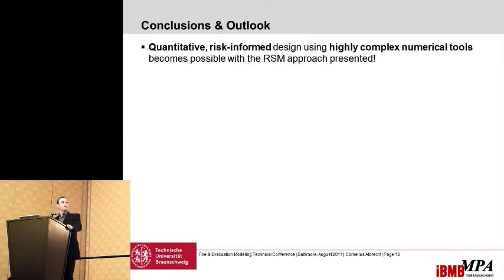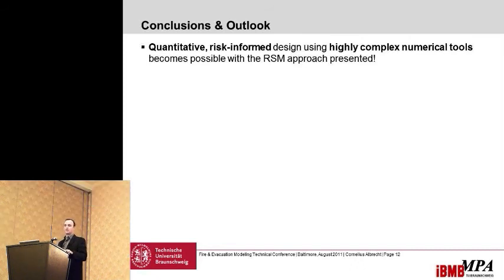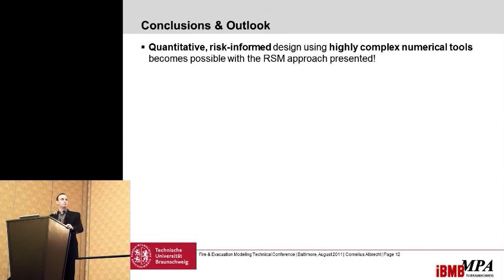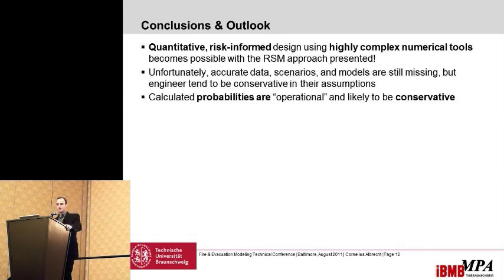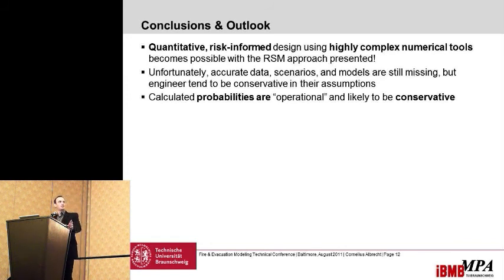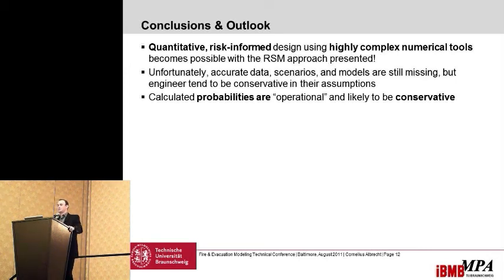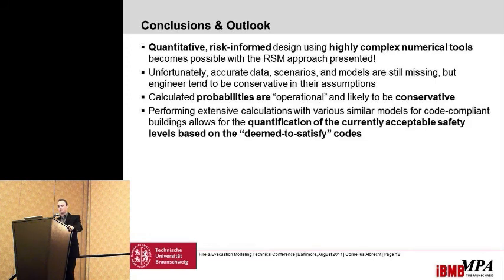In conclusion, we have a quantitative risk-informed design using complex numerical tools such as CFD and agent-based evacuation simulation. This is possible with the response surface method presented, which is also described in the paper. Unfortunately, accurate data, scenarios, and models are still missing. But engineers tend to be rather conservative, so even when assuming distribution functions, they do so on the conservative side. The calculated operational probabilities are therefore likely very conservative. If I perform extensive calculations across various building geometries and systems, I can quantify the current deemed-to-satisfy codes — giving a number for what safety level we are currently accepting.